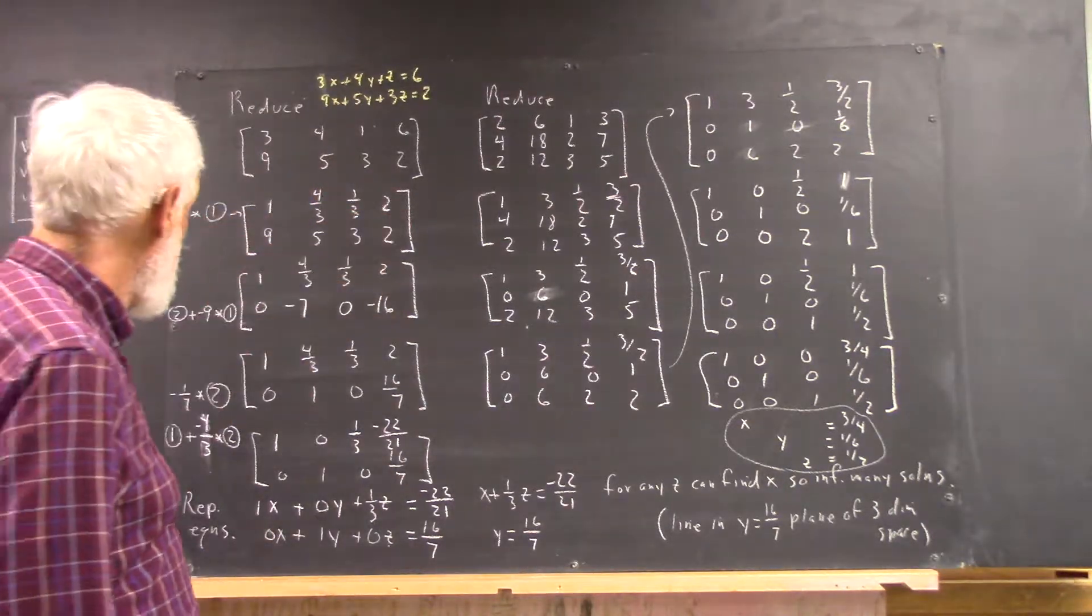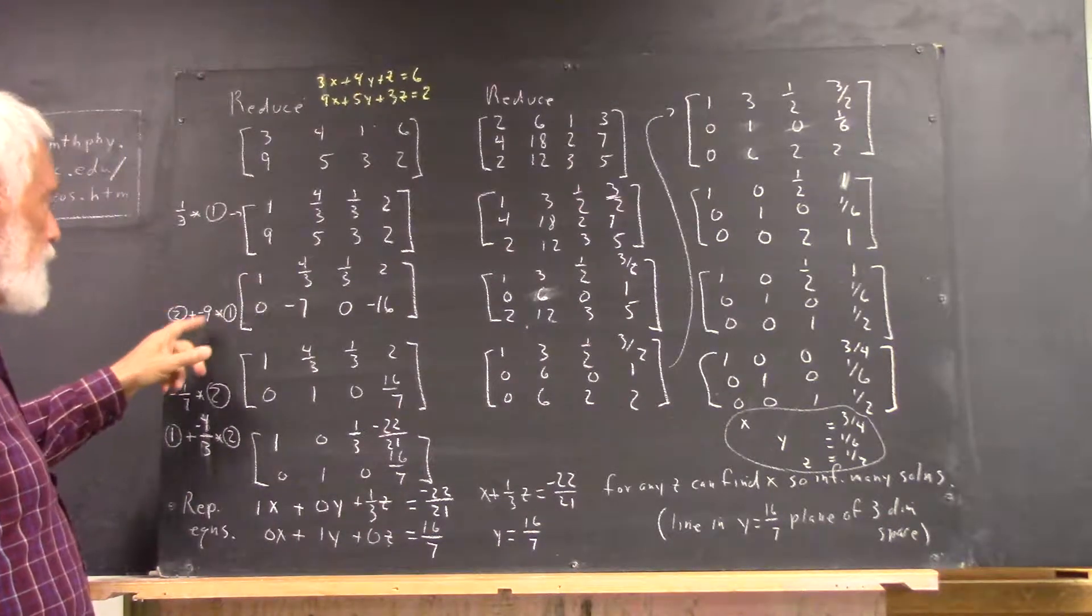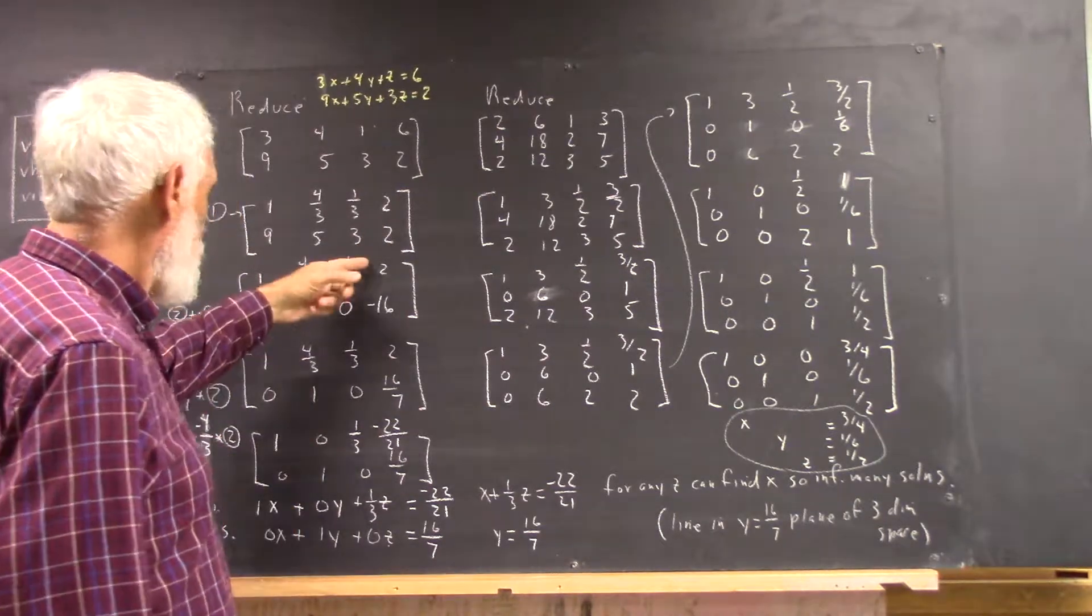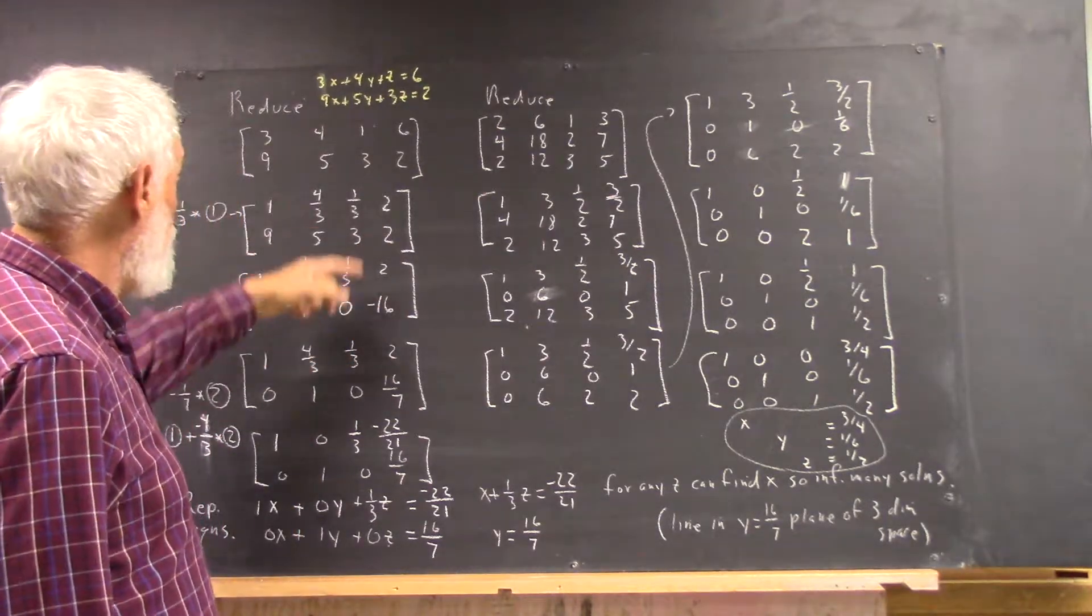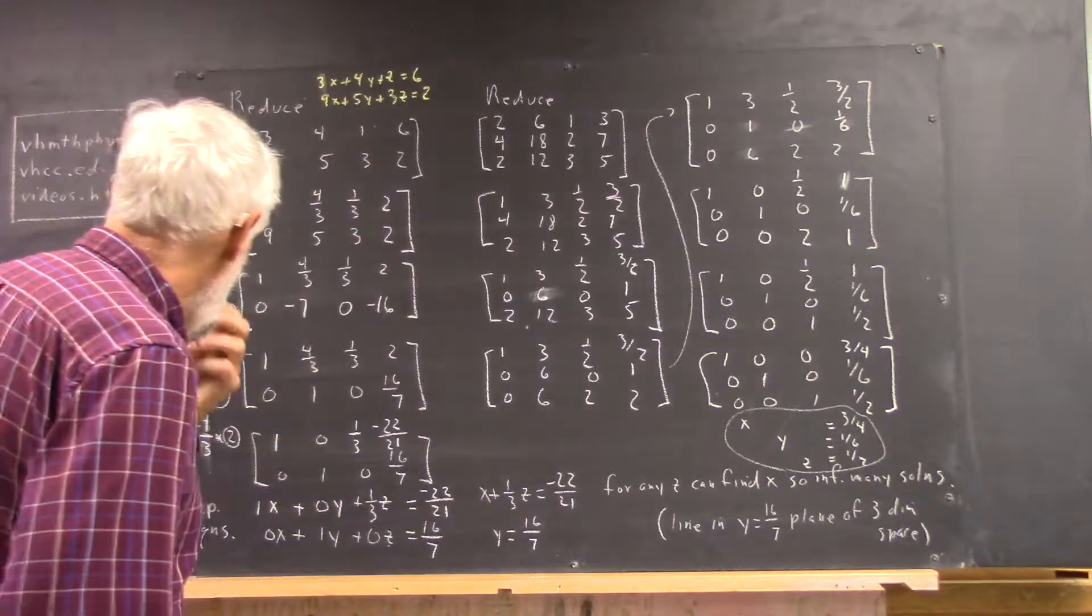Third times the first row gives us this. And then we add the second row to negative nine times the first, and we get this. The only new thing is negative nine times two is negative 18. Add that to this two, and we get our negative 16.